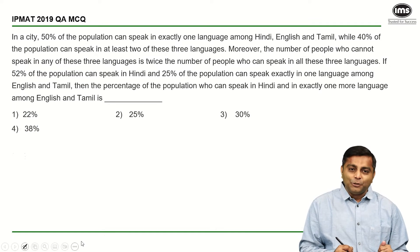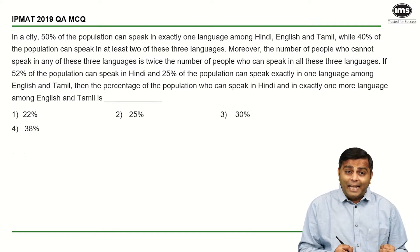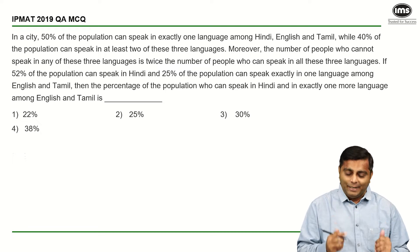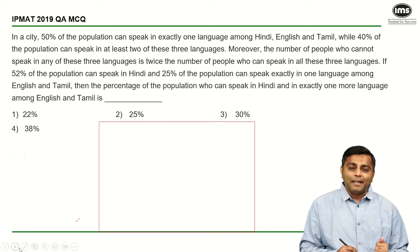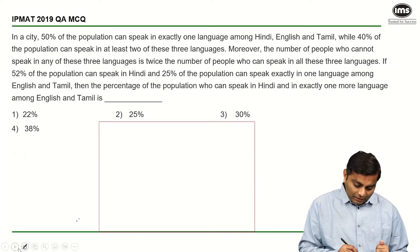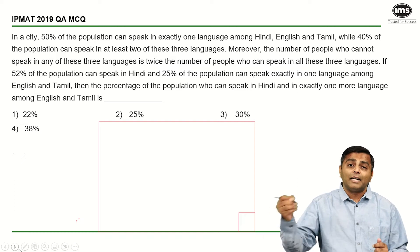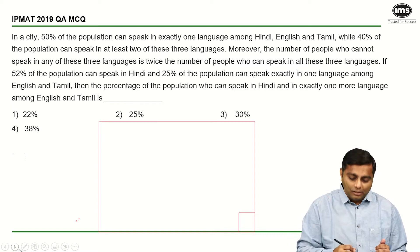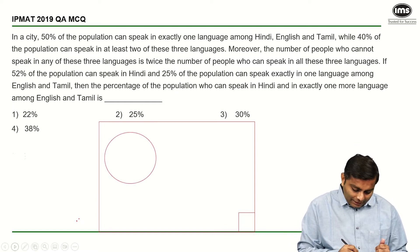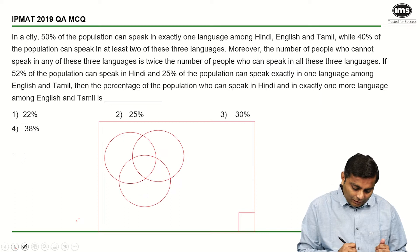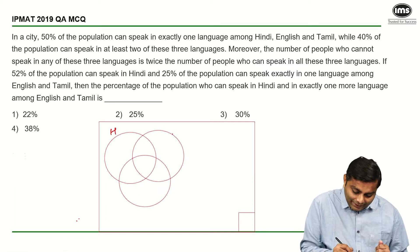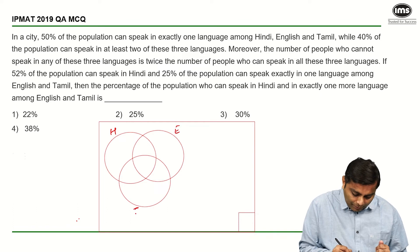Starting with the solution, the first thing is to get the diagram in place and put the numbers in the right places. We get the box — never forget that box — which means values which do not belong to the three circles we are going to draw. Now let's get the first circle, second circle and the third circle. The three circles are Hindi, English and Tamil.